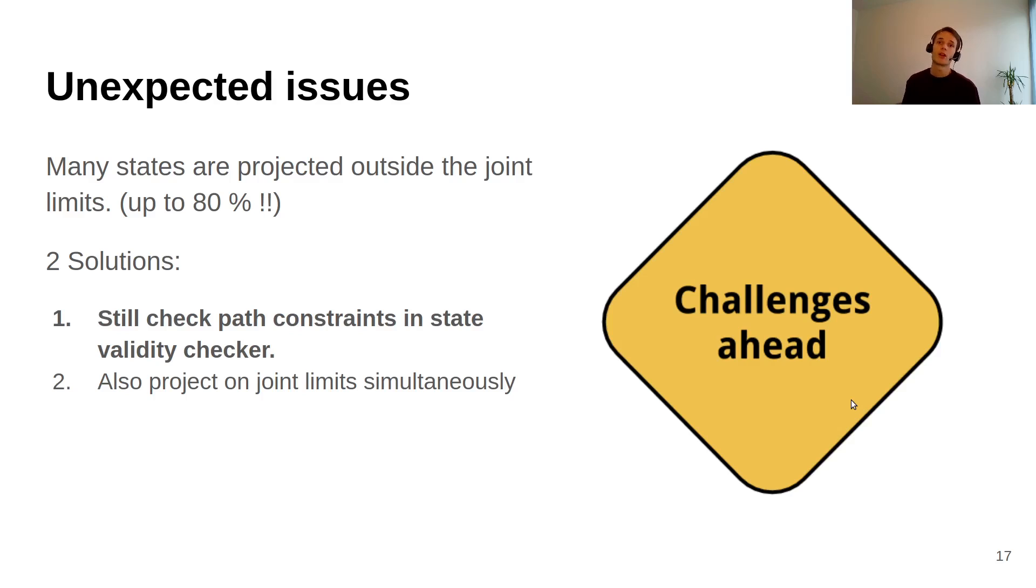There were some unexpected issues when implementing this. It turns out if you project in joint space, sometimes you project outside the joint limits because you take into account the Cartesian constraints but not the joint limits. For some simple cases, up to 80% of the samples were projected outside the joint limits and we could not use them. So two solutions I tried to address this problem: first is just throw away these invalid samples, and it turns out this works really well because you always will get some valid samples.